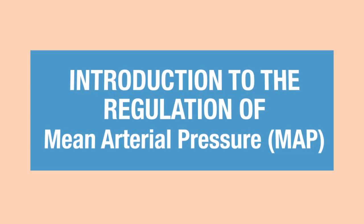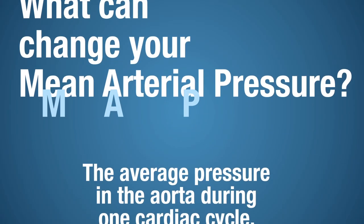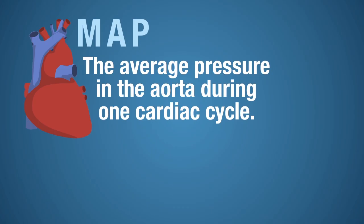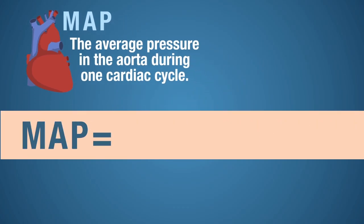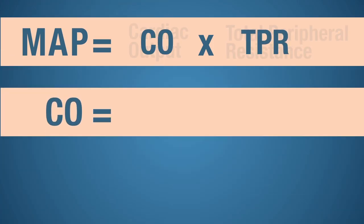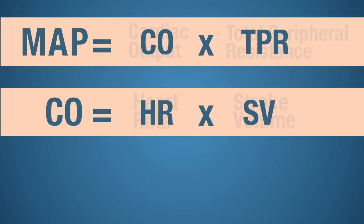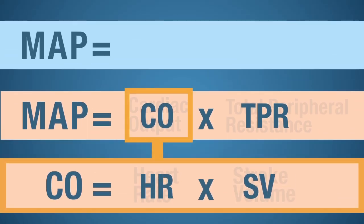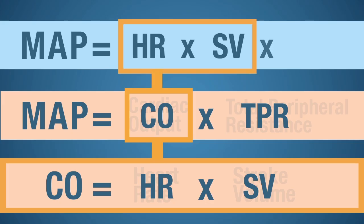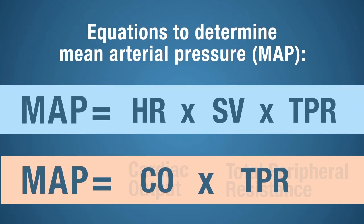To begin, we want to think about what can change your mean arterial pressure. MAP is the average pressure in the aorta during one cardiac cycle. MAP is equal to cardiac output times total peripheral resistance, TPR. And cardiac output is equal to heart rate times stroke volume. So if I substitute the equation for cardiac output — heart rate times stroke volume — and multiply by total peripheral resistance, I have yet another way to determine MAP.